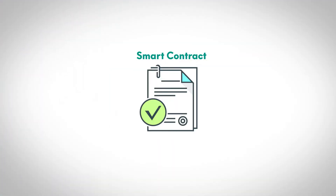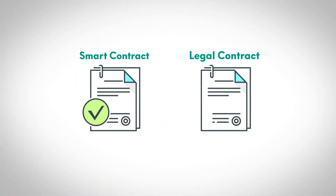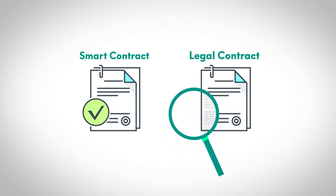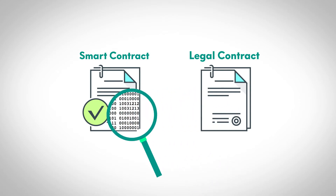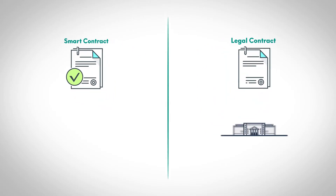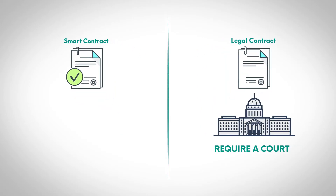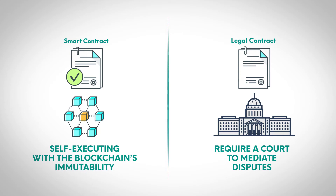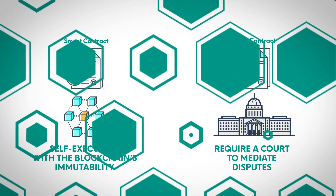Smart contracts are much like legal contracts, except instead of legal language defining the terms, code dictates the contract's terms. Unlike traditional contracts, which require a court to mediate disputes, smart contracts are self-executing, with the blockchain's immutability acting as a judge's ruling.